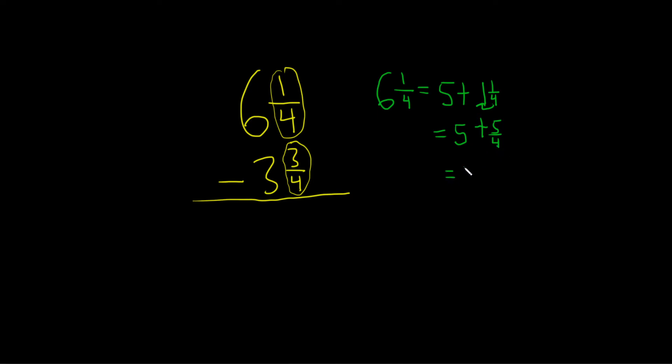So now this becomes 5 and 5 fourths. You can almost do it in your head, right? You say, okay, I'm going to borrow one from here. It becomes a 5. I get a 4 over 4. I add that to 1 over 4, so I get 5 over 4.